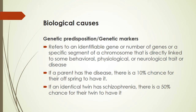What causes schizophrenia? We're going to look at the biological causes first. There's a genetic predisposition, or a set of genetic markers — this refers to an identifiable gene, or number of genes, or a specific segment of a chromosome that is directly linked to some behavioral, physiological, or neurological trait or disease. There is some element carried through the genetic material that our parents pass along to us. If your parent has schizophrenia, there is a 10% chance for their offspring to have it.